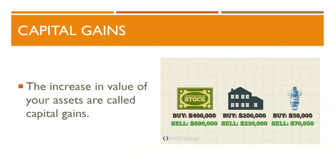Capital gain is the second term, and this refers to the value increase of the capital you own. For example, if you buy a stock for $500 and it grows in value to $1,000, you have a capital gain of $500. The same concept applies to the value of your home or a classic car that you own — if it appreciates or goes up in value, it's a capital gain.